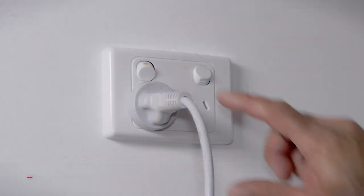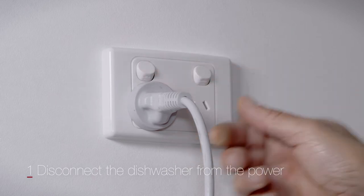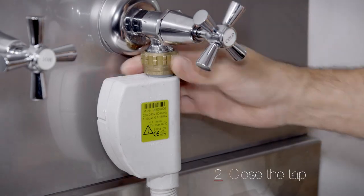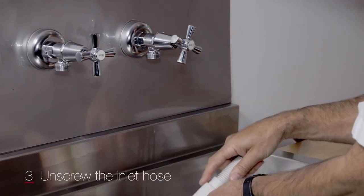We're ready to go. Firstly, disconnect the dishwasher from the power. Close the tap. Unscrew the inlet hose.